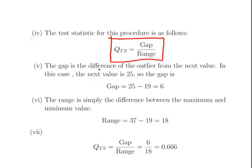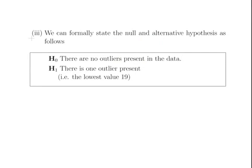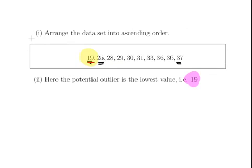The gap is the difference of the outlier from the next value. So if we recall on our number line up here, let's just go back. The lowest value, or the outlier here, the potential outlier here was 19. The next lowest value here is 25, and the gap there is 6. So there is a difference there of 6.